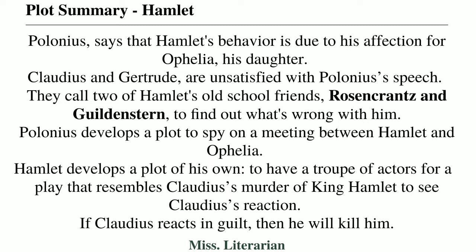Meanwhile, Polonius tries to develop a plot by spying on the meeting of Hamlet and Ophelia. But Hamlet himself develops a plot in order to find out the real murderer of his father. He calls for a troop of actors to play a scene resembling Claudius's alleged murder of King Hamlet. By doing so, Hamlet decides to find out the guilt of Claudius through his face reaction, and if Claudius's reaction becomes doubtful, then he will have no excuse to kill Claudius.